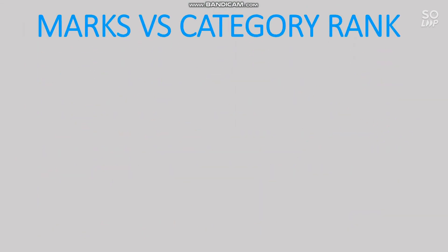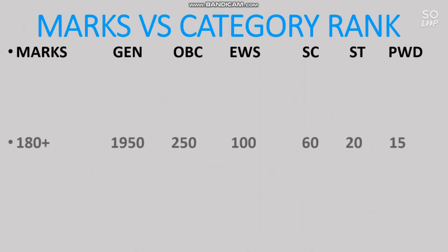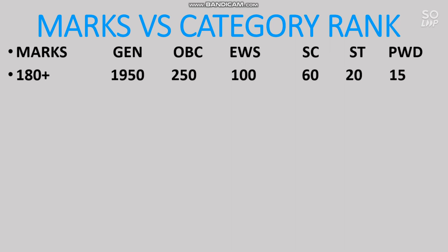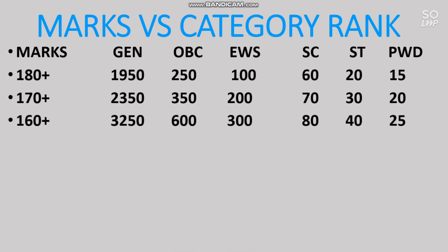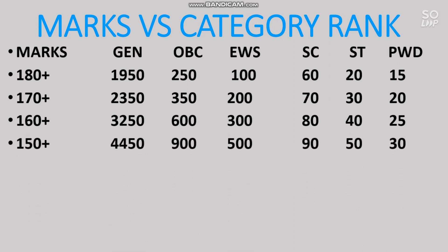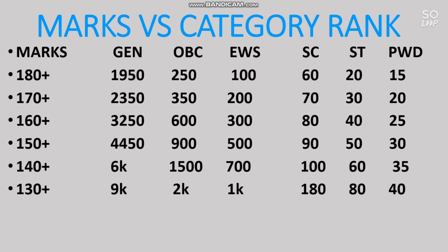For 200+ marks: General rank under 1050. For 190+: General under 1550. For 180+: General under 1950. For 170+: General under 2350. For 160+: General under 3250. For 150+: General under 4000. For 130+: General under 9000. You can check the other category ranks sideways by pausing the video.